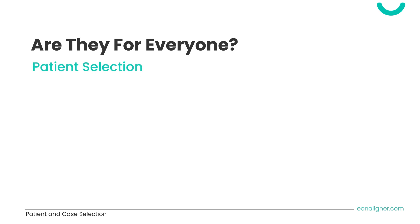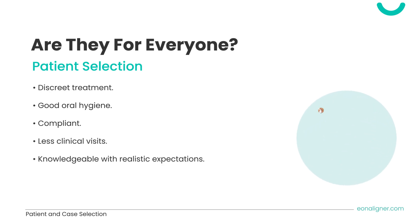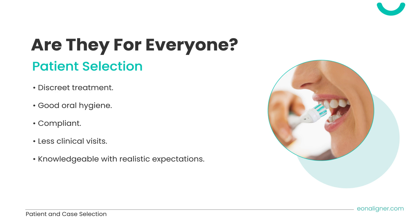First, we will elaborate on patient selection. Eon aligners are for patients looking for discrete treatment that has less adverse impact on their social activities. Patients should have good oral hygiene and a stable periodontal status. Any active disease in the teeth or periodontium should be resolved before treatment. Patients should be motivated and committed, as the aligner should be worn for at least 22 hours per day and only removed when eating or cleaning.